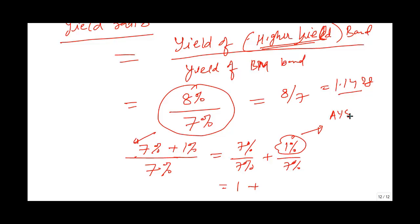Remember, absolute yield spread is 8% of the higher yield bond minus 7% of the benchmark bond, so the difference is 1%. This is your absolute yield spread.